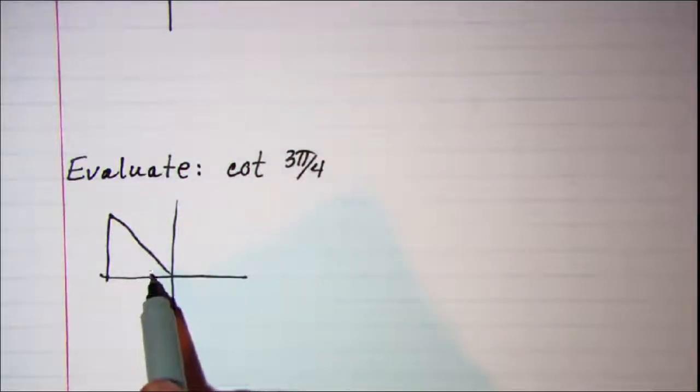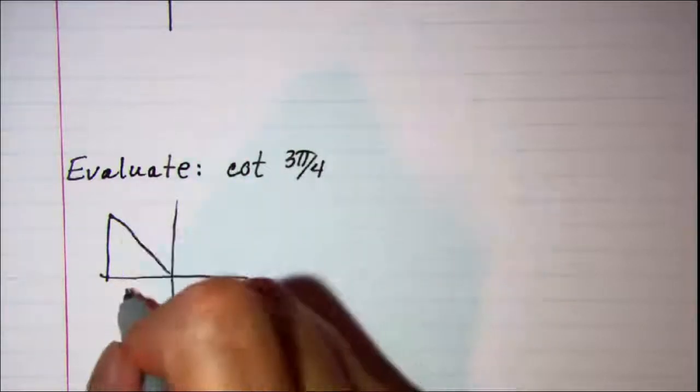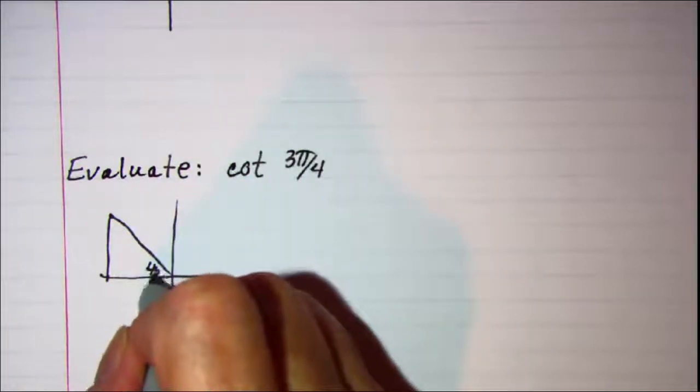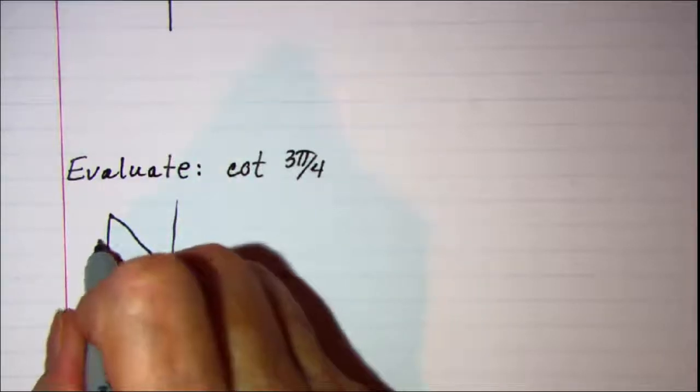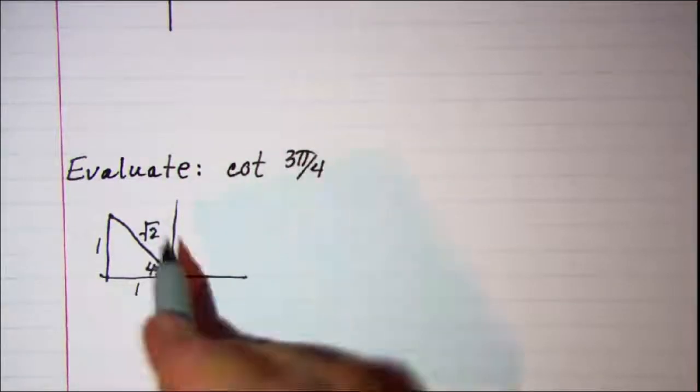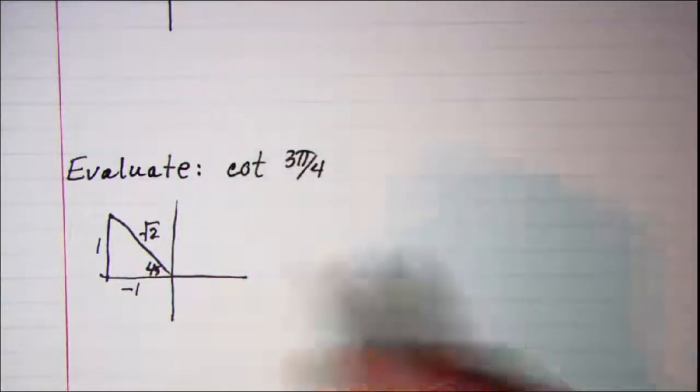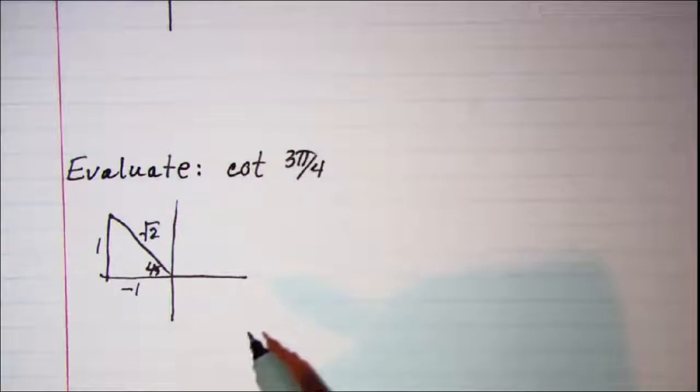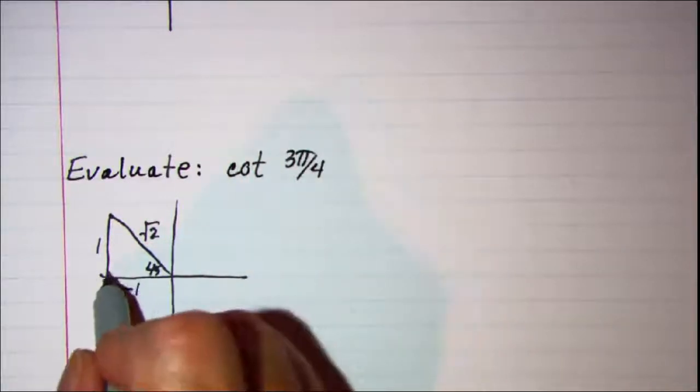The reference angle is 1 pi over 4 and so this is going to be a 45 degree reference angle which means I put 1, 1, root 2 on my sides and this one is to the left so he gets a negative. This one is above so it's positive. This is our right angle.